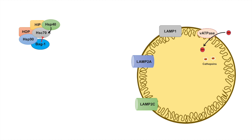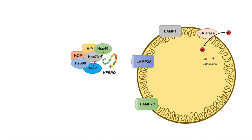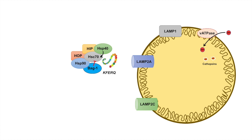In the process of CMA, when the chaperone complex — via HSC70 — recognizes a soluble protein with a KFERQ consensus sequence, it binds to that protein and brings it to the lysosome. The KFERQ protein cargo then binds to the LAMP2A receptor. The next step is an unfolding process whereby the protein cargo becomes unfolded, allowing it to be easily translocated into the lysosomal lumen.